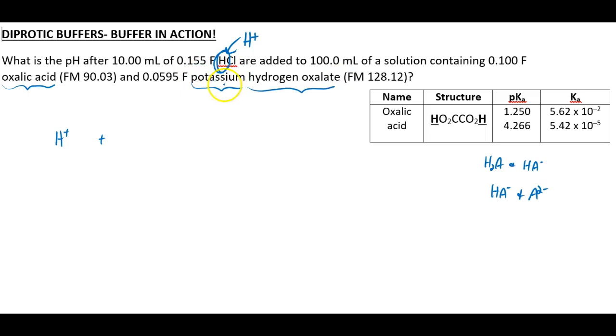Well, this potassium is a big clue. Potassium is a plus, meaning hydrogen oxalate has got to be HA minus. And then the other species here, oxalic acid, that's got to be H2A.